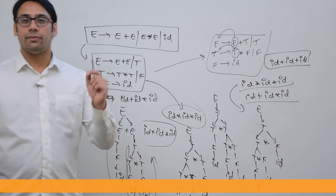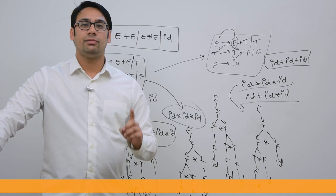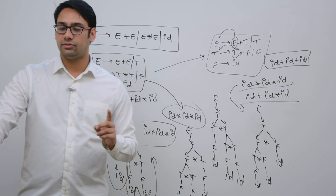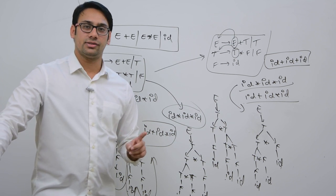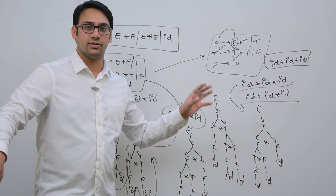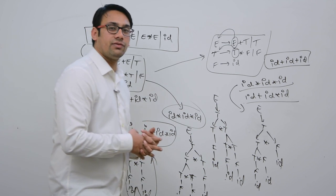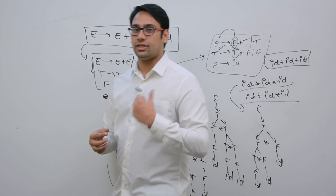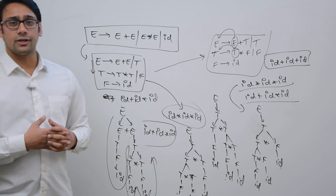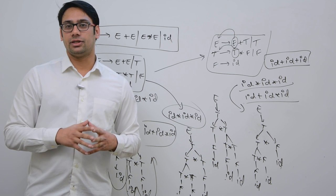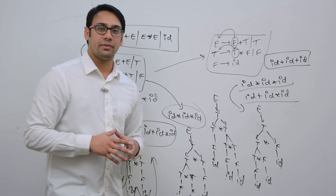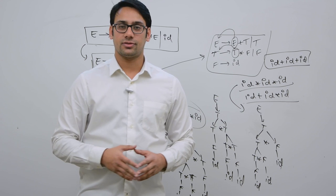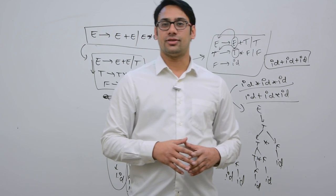To make a grammar go from ambiguous to unambiguous, we have done two things. First, we made the grammar follow the rules of associativity. Second, we made the grammar follow the rules of precedence. If you can make the grammar follow the rules of associativity and precedence, then the grammar is unambiguous. When we cover compiler design, we will take a few more examples. For theory of computation, this must be fine. Now let us see if, given a grammar, can you minimize it — that is, represent the same grammar with fewer productions without changing the language.